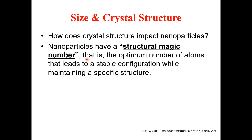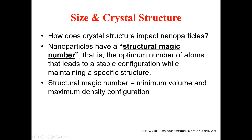What is the structural magic number? The formal definition is: inside a particle, it is the optimum number of atoms that lead to a stable configuration while maintaining a specific structure. In other words, the structural magic number equals the minimum volume and maximum density configuration.